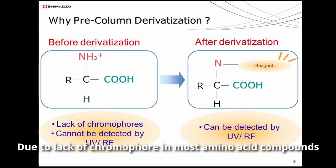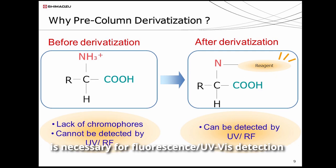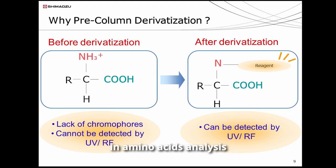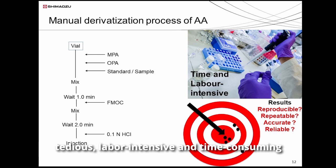Due to the lack of chromophores in most amino acid compounds, derivatization before or after column separation is necessary for fluorescence or UV-Vis detection in amino acid analysis. Conventional methods by manual derivatization are always tedious, labor-intensive, and time-consuming.